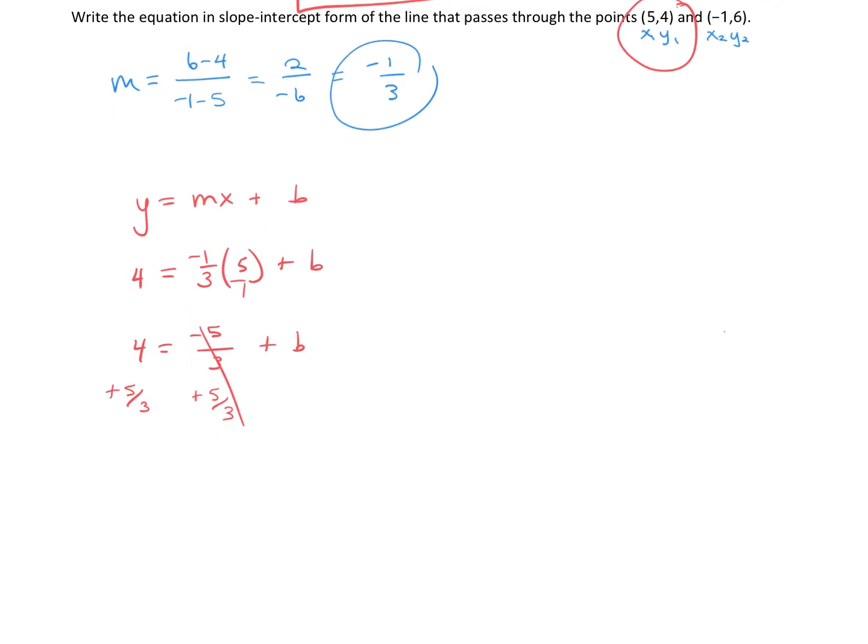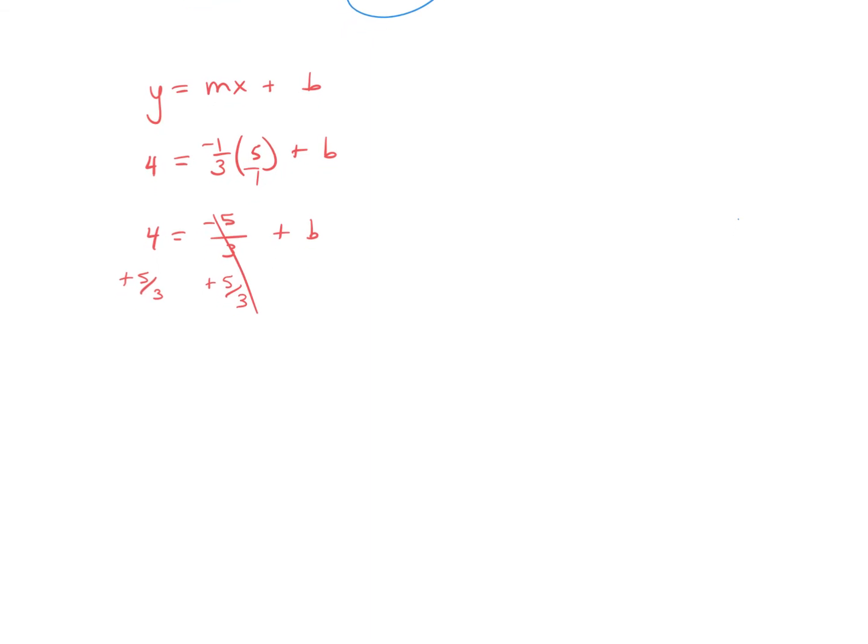And our b value, which is our y-intercept, is equal to 4 plus 5 thirds. And I wrote it separate because I want to go ahead and get that common denominator. So multiply by 3, and really we have 12 thirds. That's the same value as 4, plus 5 thirds. Add the numerators, you get 17, and the thirds stays the same.